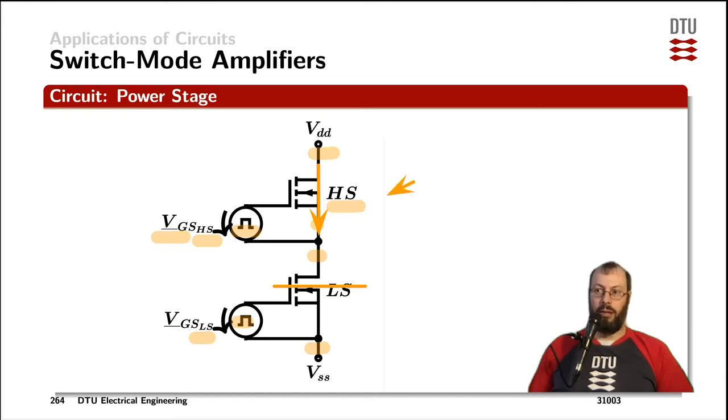That means that this node, the so-called switch node, is either getting pulled high towards the positive supply rail when the high side MOSFET is on or it's getting pulled low to the negative supply rail when the high side MOSFET is off and the low side MOSFET is on. Therefore, we get a square wave representation on that switch node.